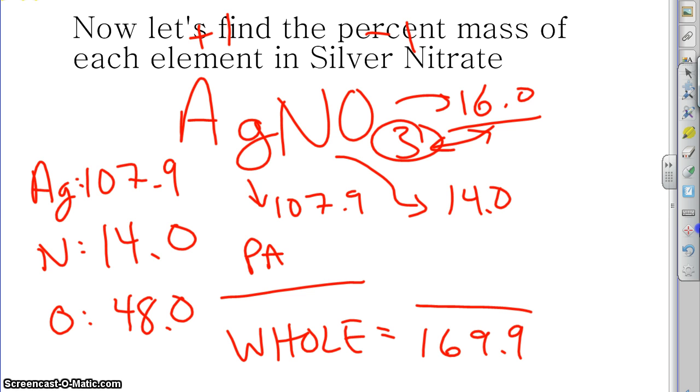And the part is, well, it depends on which thing you want to find first. If we find the silver first, it's going to be 107.9. Don't forget to take it times a hundred. And that's what we're going to get there. So 107.9 divided by 169.9 is 63.5 percent silver. And the rest, once you've done one of them, the rest are always pretty easy because you'll find that the part, the whole obviously doesn't change. The whole weight of silver nitrate is always going to be 169.9. So all I have to do now to find, for example, nitrogen is just erase the part and write nitrogen's part 14 instead. So 14.0 divided by 169.9 and I get 8.2 percent nitrogen.